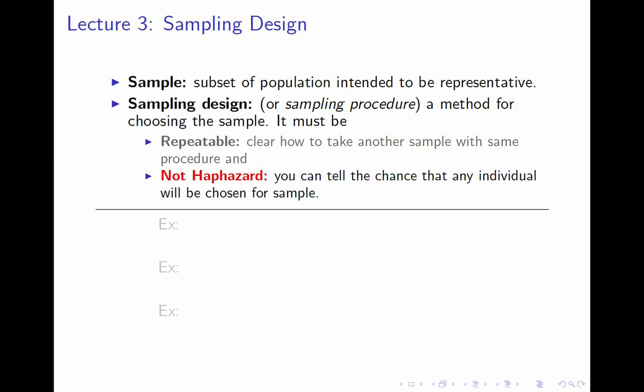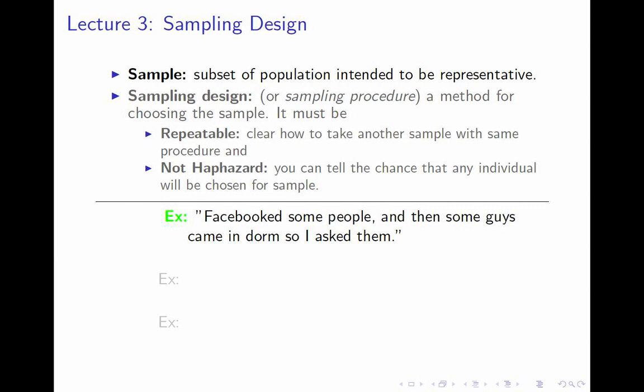Here are some paraphrased descriptions I have seen. The first: 'The group asked some people on Facebook, and then some guys came in their dorm room, so they asked them.' This is not repeatable and is haphazard. It's not repeatable because I have no idea from that description how I would do the same thing, and it's haphazard because I have no idea which individuals would be more likely to be chosen.